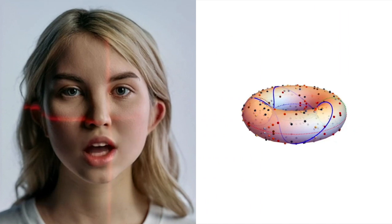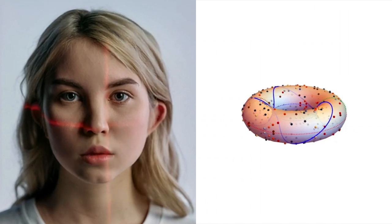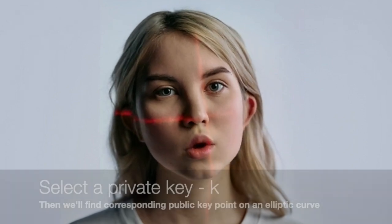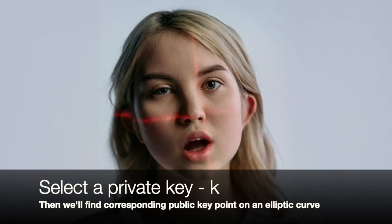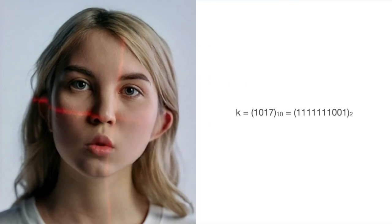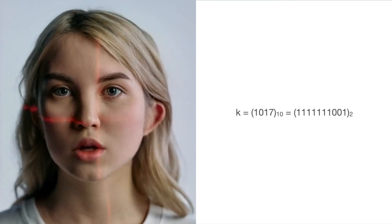So, let's imagine we have a playground with points on an elliptic curve. We want to do some secret math with these points to protect our data. The double and add method is a way of doing this efficiently. We start with a secret number, k, that we want to multiply with a point on the elliptic curve. This number can be represented in binary, which is just a sequence of zeros and ones.